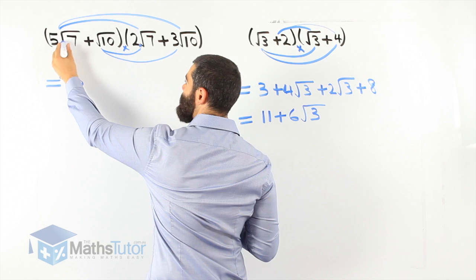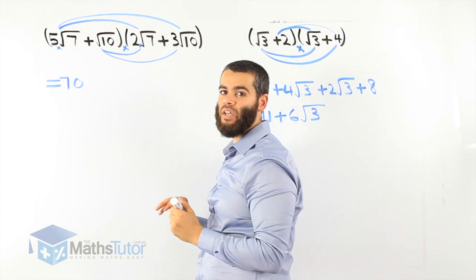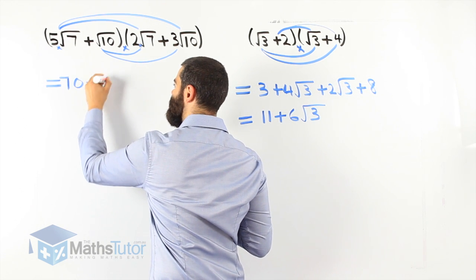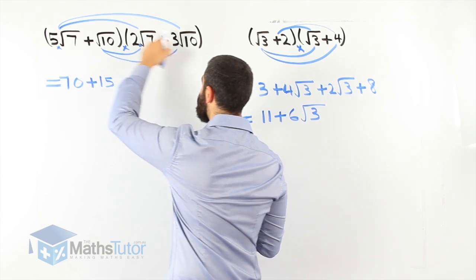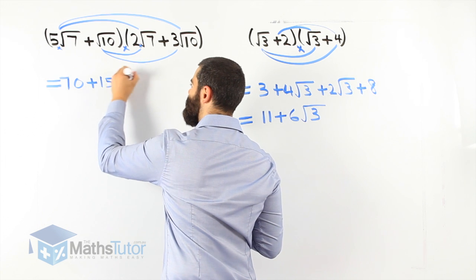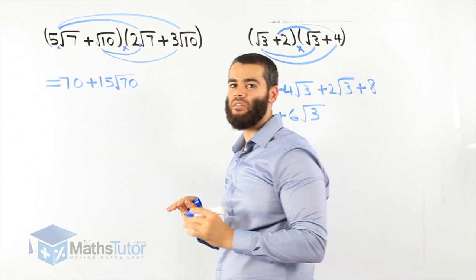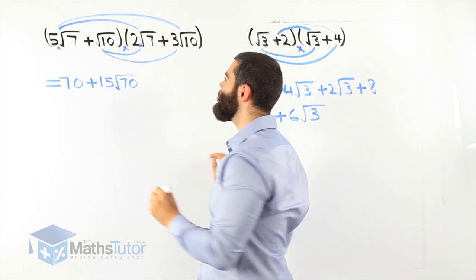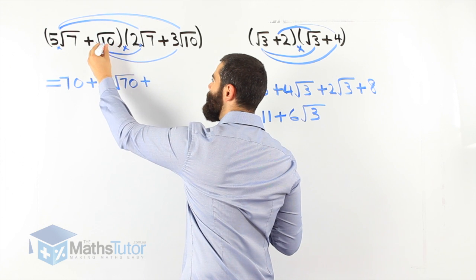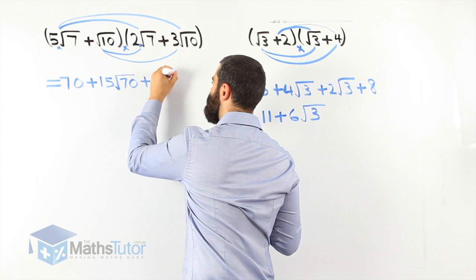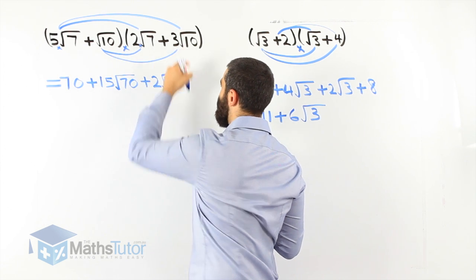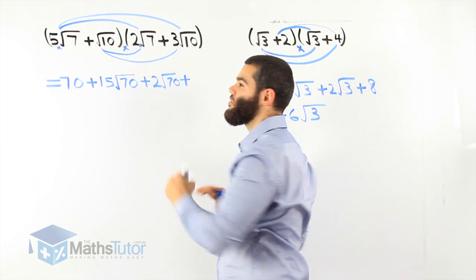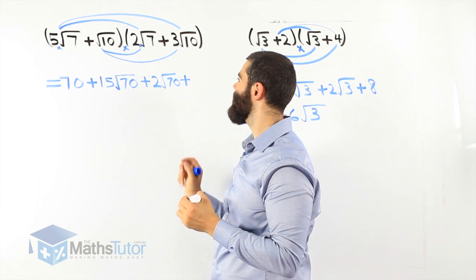Now 5 root 7 times 3 root 10: 5 times 3 is 15, and root 7 times root 10 is root 70, giving us 15 root 70. Then root 10 times 2 root 7 is 2 root 70. And root 10 times 3 root 10: root 10 times root 10 is 10, and 10 times 3 is 30.